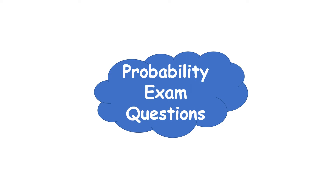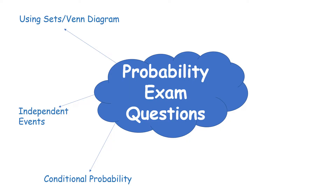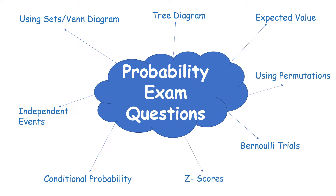Hi and welcome to this Leaving Cert higher level probability review video. This video will have absolutely no examples — we are just focusing on what you need to know before approaching any exam questions. There is a video which reviews all these types of questions and I will link that in the description below. The different styles of questions we see include sets or Venn diagrams, conditional probability, independent events, tree diagrams, expected value, Bernoulli trials, using permutations, and finally Z scores, which creep into statistics-style questions. I'm going to go through each of these.